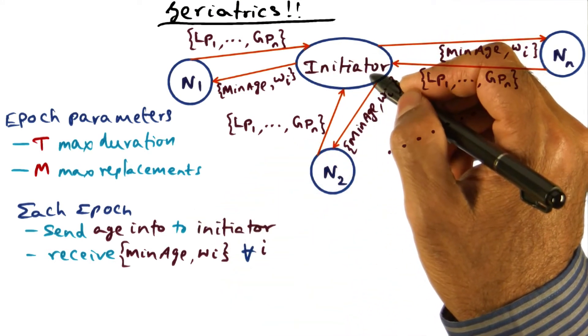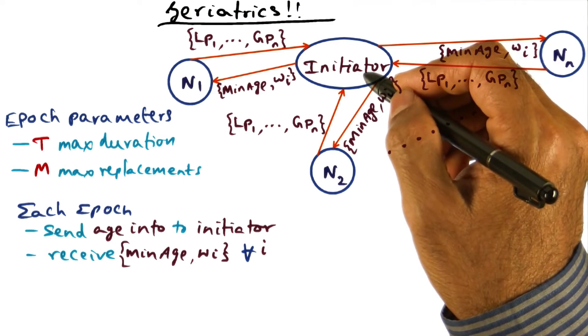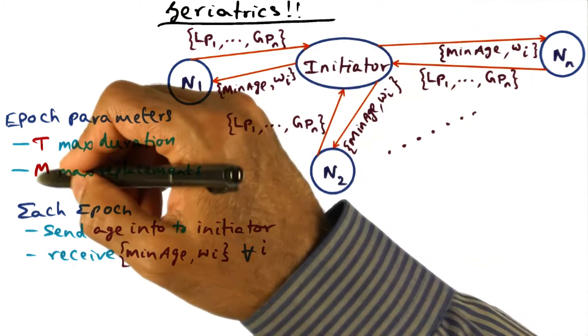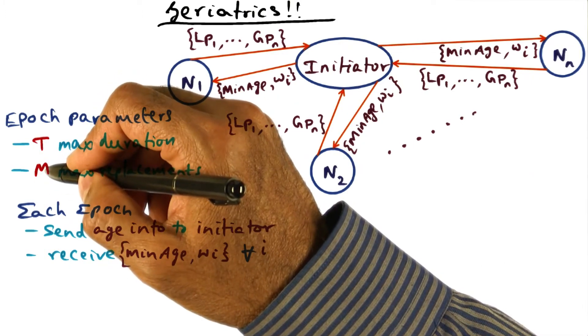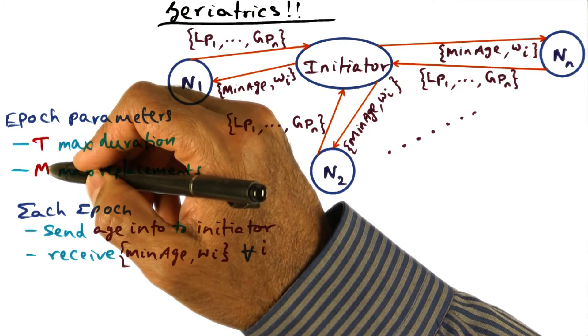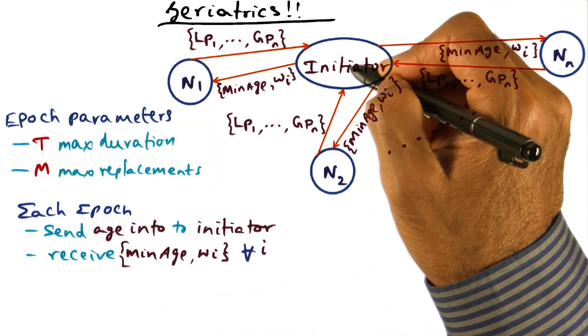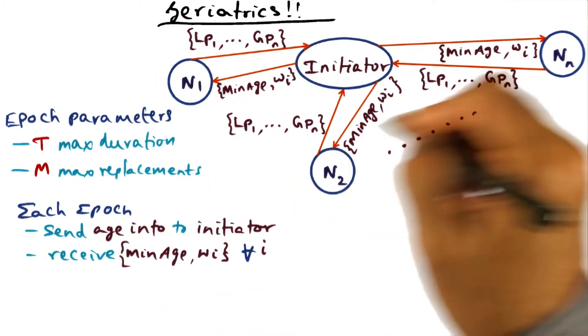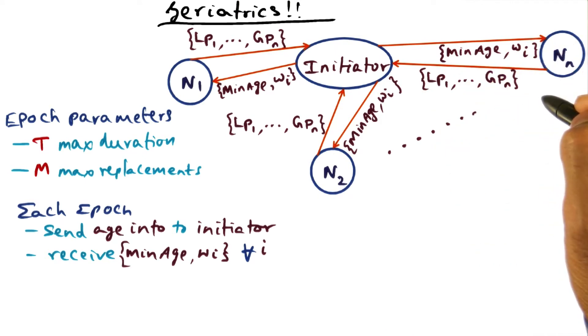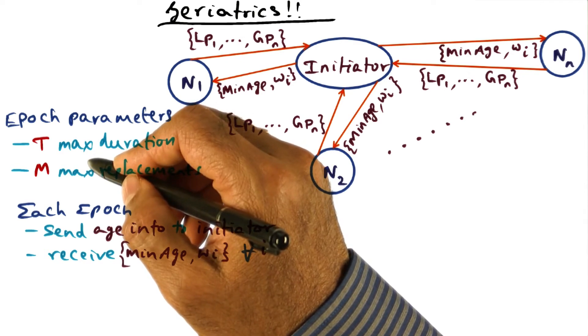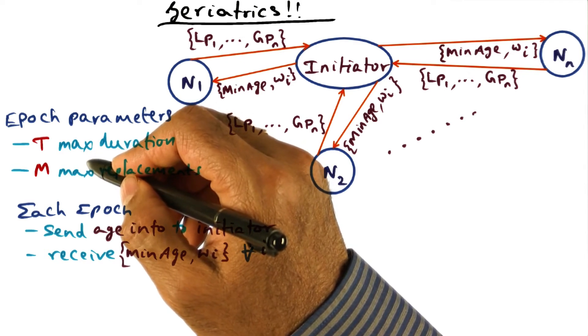What the initiator node is going to do is two things. It's going to find out what is the minimum age of all the M pages that are going to be replaced. Remember that the smaller the age, the better. So what it is going to say is, out of all the pages that exist in the entire cluster, what are the oldest M pages that are going to be replaced in the upcoming epoch? And for those M old pages, what is the minimum age?